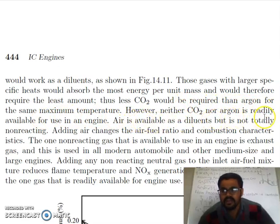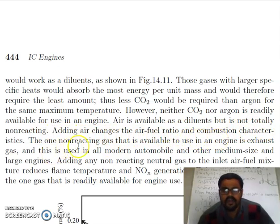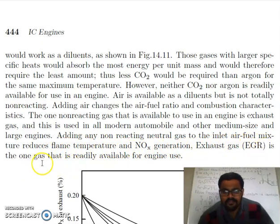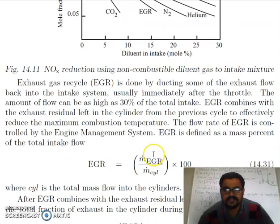However, neither CO2 nor argon is readily available for use in an engine. Air is available as a dilutant but is not totally non-reacting, and adding air also changes the air-fuel ratio. The one non-reacting gas that is readily available is the engine exhaust gas, and this is used in all modern engines. Adding any non-reacting neutral gas to the inlet air-fuel mixture reduces flame temperature and NOx formation. EGR is done by ducting some of the exhaust flow back into the intake system, usually immediately after the throttle.